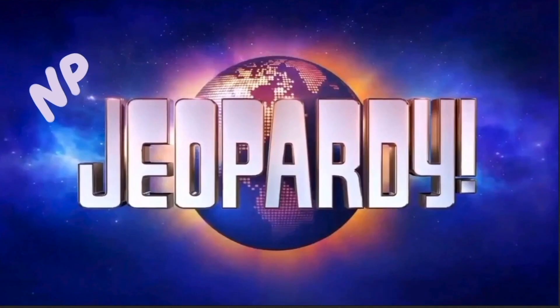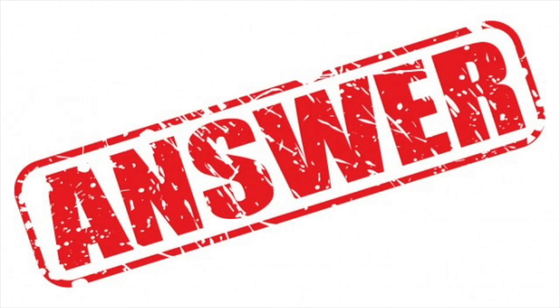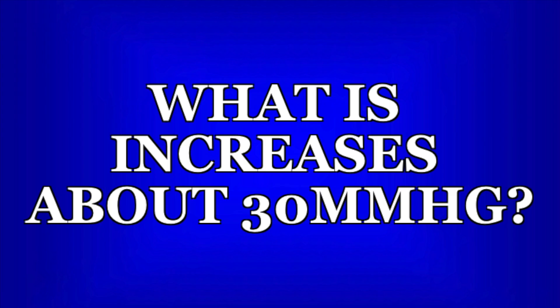Now it's time for NPTE Jeopardy! Pause the video now if you want time to read and think about the question. Systolic blood pressure increases 8 to 12 millimeters of mercury for each MET for a given activity, which averages out to about a 30 millimeter of mercury increase.